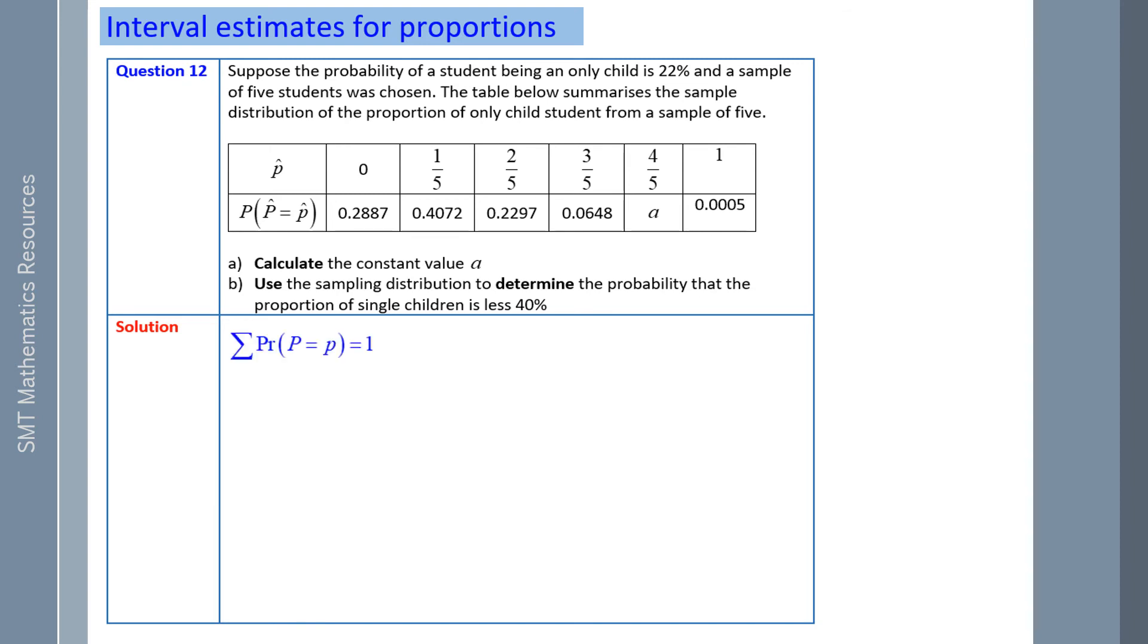So calculate the constant value A. The sum of those probabilities has to equal one. Hence, if we add all those up, we work out that the sum has to equal one. We're going to simplify that. 93.06%. We can take that from both sides. So A is about 6.94%.